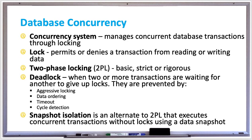A shared lock only permits a transaction to read data but not write data, and concurrent transactions can have a shared lock on the same data. An exclusive lock permits a transaction to read and write data, and if one transaction holds an exclusive lock, then no concurrent transactions can have a shared or exclusive lock on the same data.